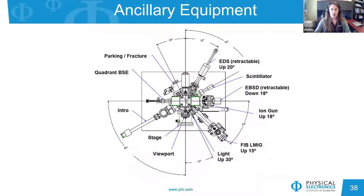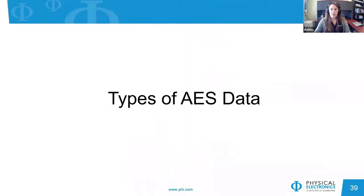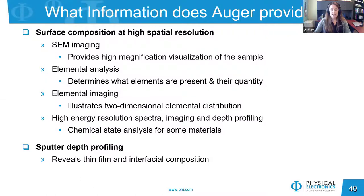Several ancillary hardware attachments are also available on modern systems. At PHI, we offer a backscatter electron detector, a sample parking and fracture attachment, an EDS detector, an EBSD detector, and a FIB-LMIG gun. From AES, you can get SEM images providing high magnification visualization, determine which elements are present on the surface and their quantity, get two-dimensional elemental distribution with elemental imaging, obtain chemical state information for some materials using high energy resolution analysis, and sputter depth profile to reveal thin film interface composition.